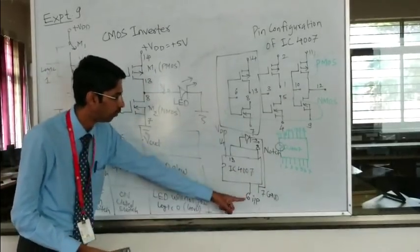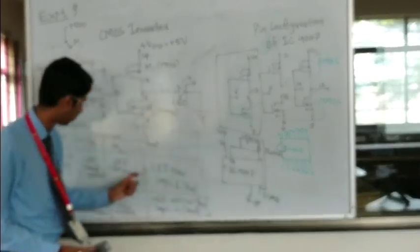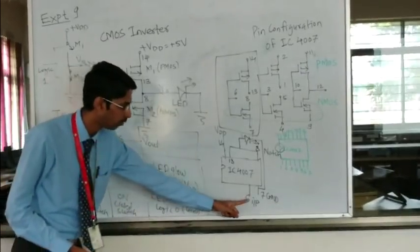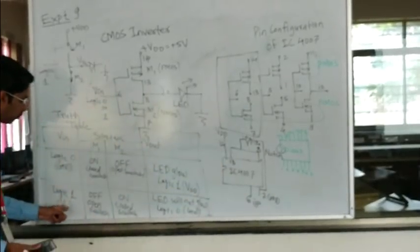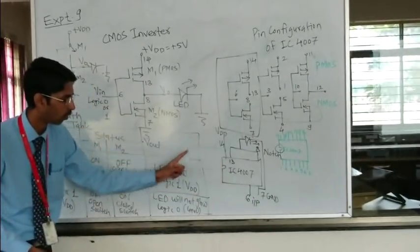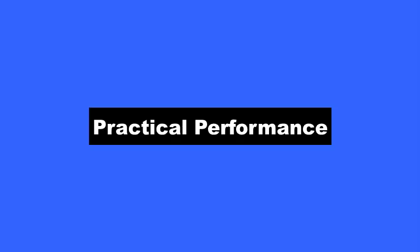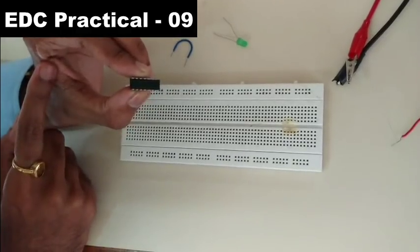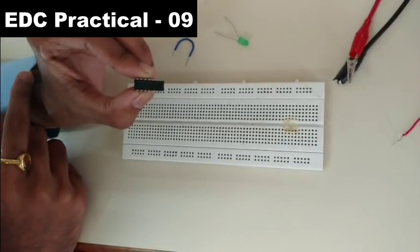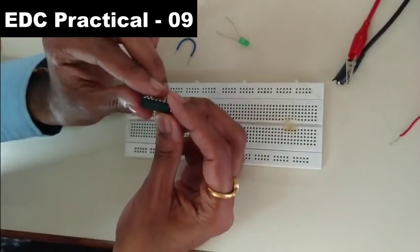Depending on the input: if you connect input pin 6 to ground (pin 7), that is logic 0. If you connect input to pin number 14, that is logic 1. You have to verify the LED behavior for both logic 0 and logic 1 — that is the experiment. This is how the circuit is constructed to drive the LED using IC 4007, which is a MOSFET IC — a 14-pin IC.